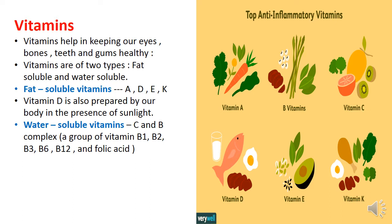Our body needs vitamins and minerals for its normal functioning and prevention from diseases. Vitamins help in keeping our eyes, bones, teeth, and gums healthy. Vitamins are of two types: fat-soluble vitamins and water-soluble vitamins. Fat-soluble vitamins are vitamins A, D, E, and K. These vitamins are stored in the fat tissues of the body and used as and when the body needs them.